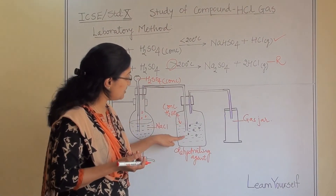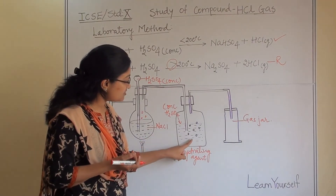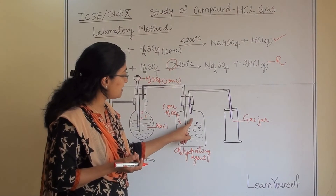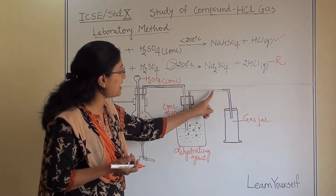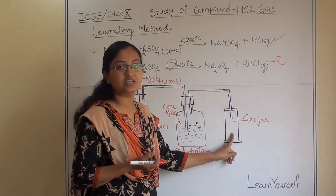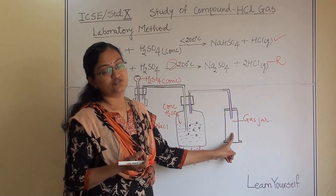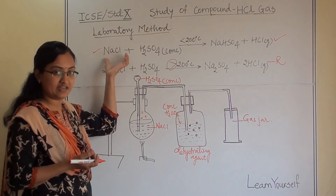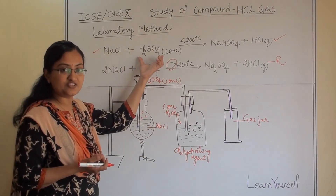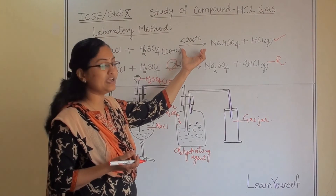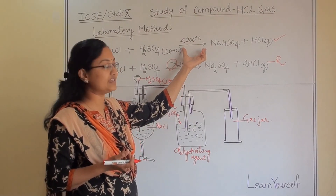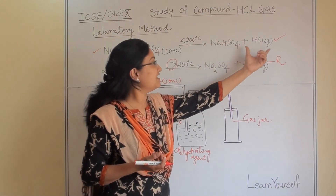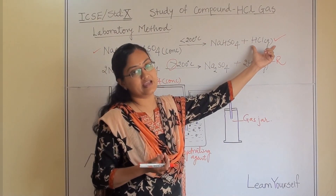The pipe should be dipped inside so that the gas passes through H₂SO₄, then comes up and goes through the pipe where it is collected into the gas jar. So this is our process: we use metallic chloride NaCl and concentrated H₂SO₄, maintaining temperature less than 200°C, to get sodium bisulphate and our product, hydrogen chloride gas.